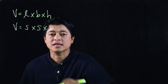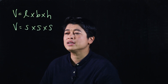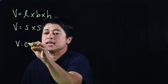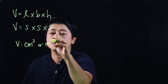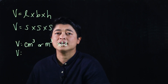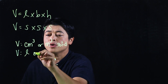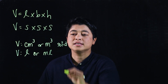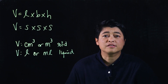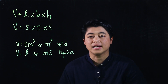From the last lesson: if it's a solid, the unit of measurement is cm³ or m³. But if it's a liquid, the unit of measurement is either liters or milliliters.